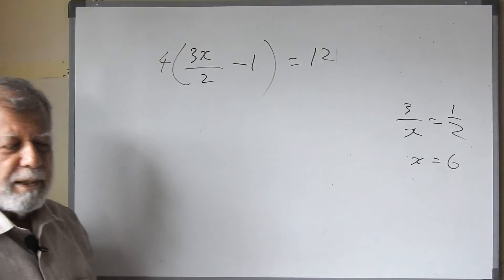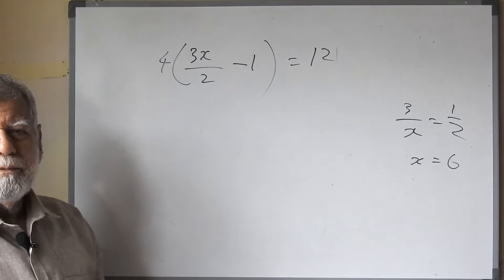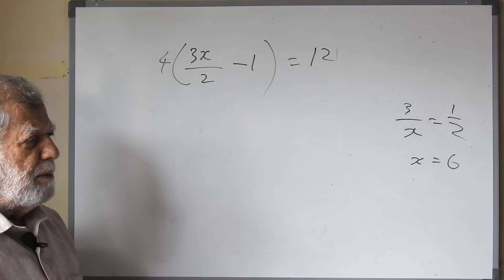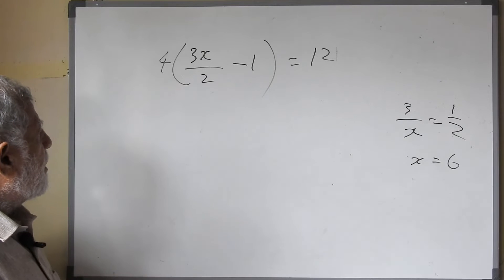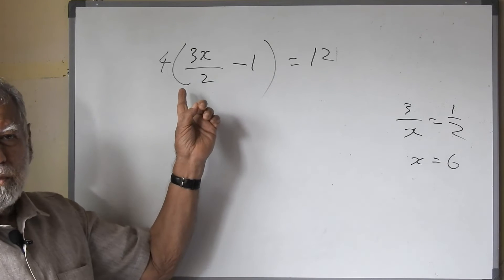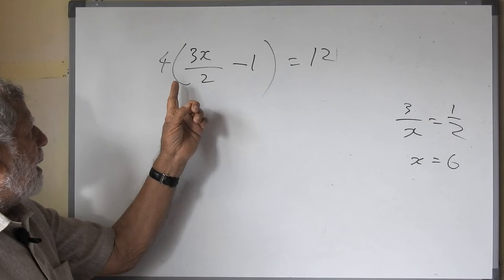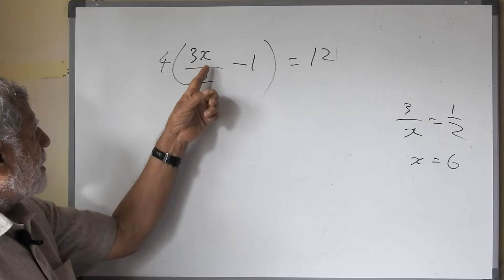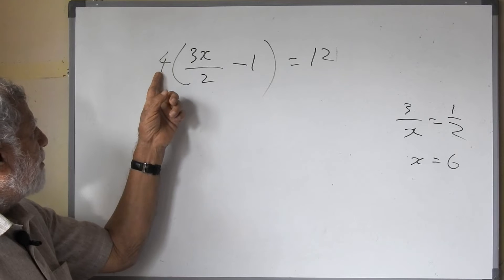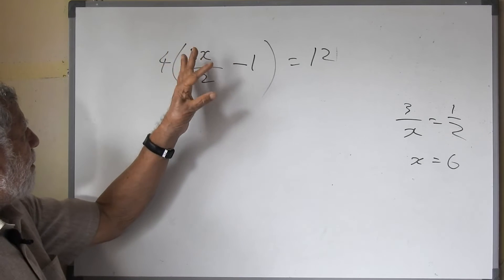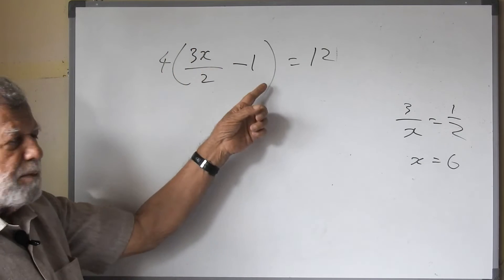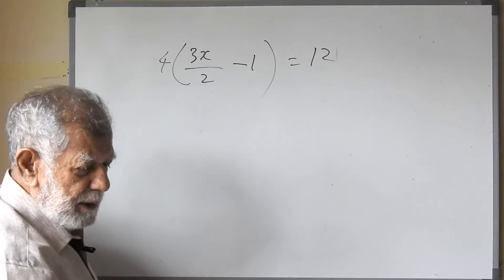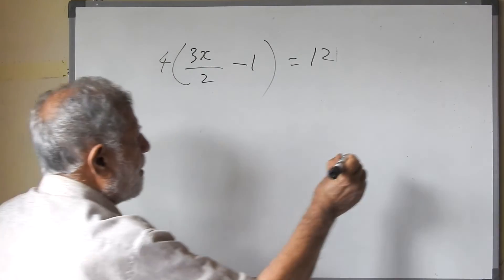Look at this — this is another type. There are different types of simple equations. At the beginning, you should do lots of sums and then you will get the experience. Now when there is a bracket, you know we have to multiply by the number outside to get rid of the bracket. So here, bracket 3x upon 2 minus 1, and the outside number is 4. So you have to multiply both terms by 4.